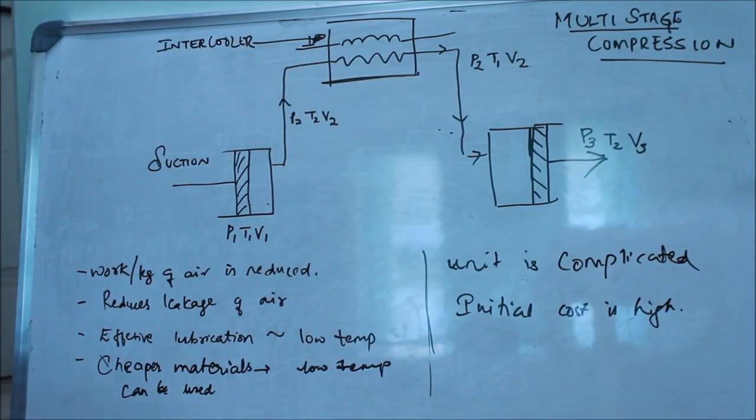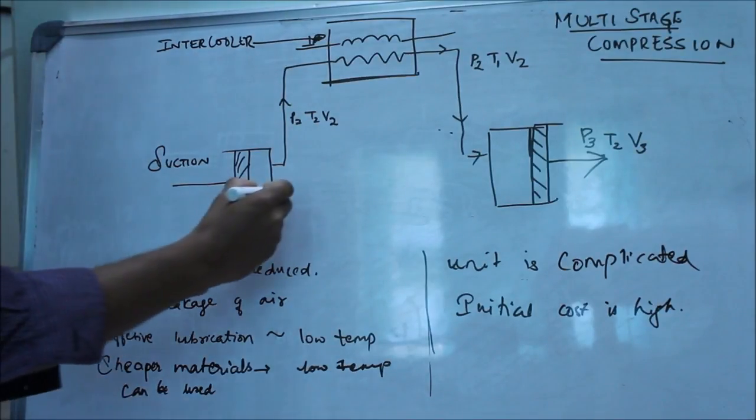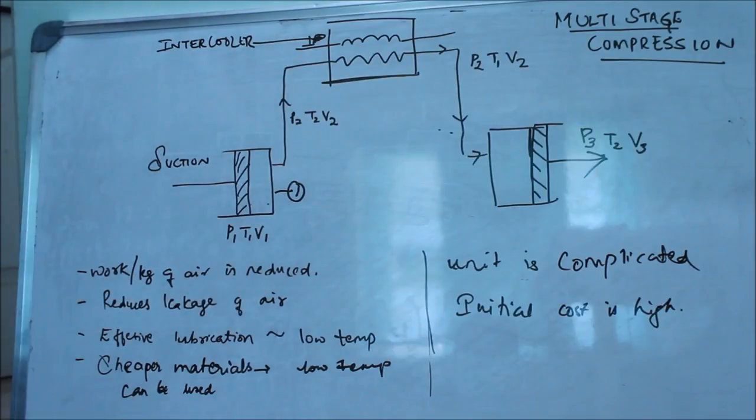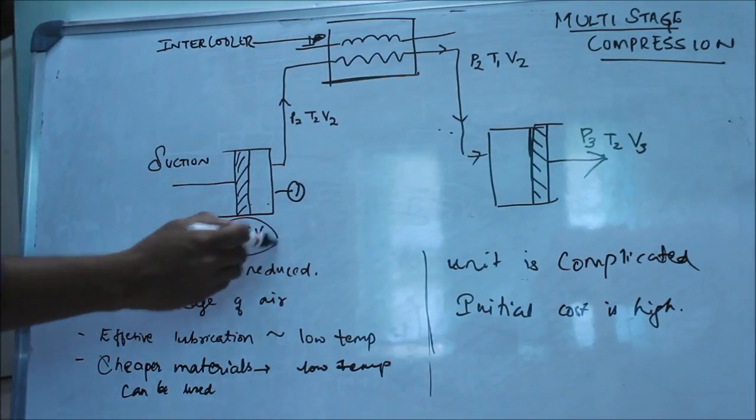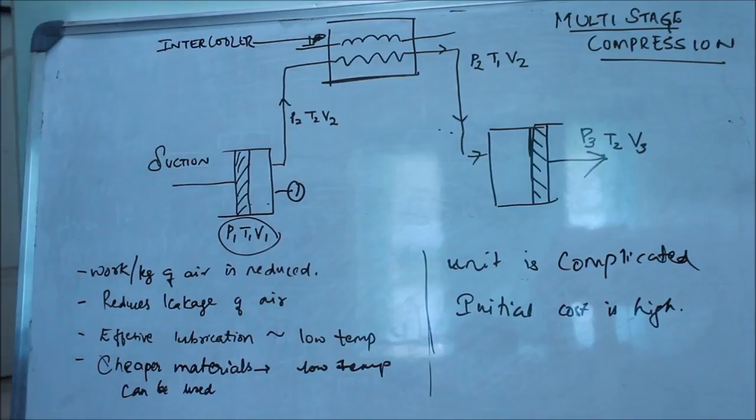So what happens is, first, in the first cylinder, cylinder one, suction takes place. The properties of the air sucked in will be P1, T1, and V1. The pressure will be P1, temperature T1, and volume V1.